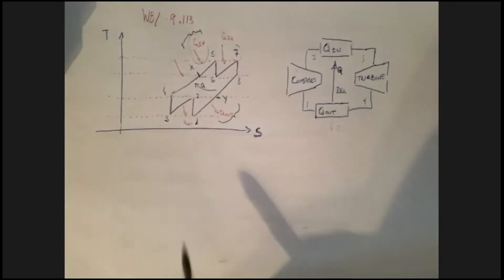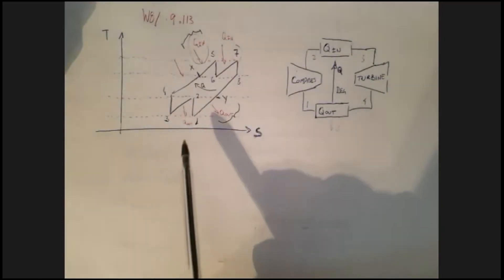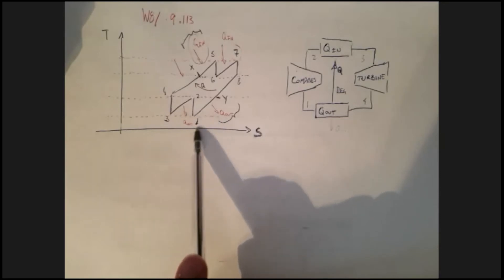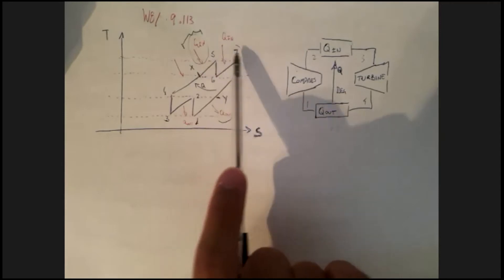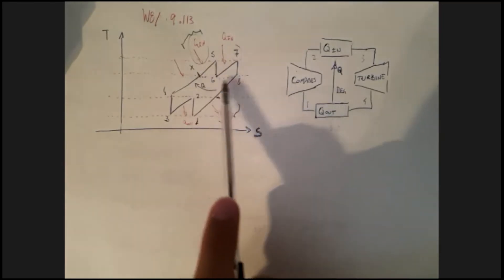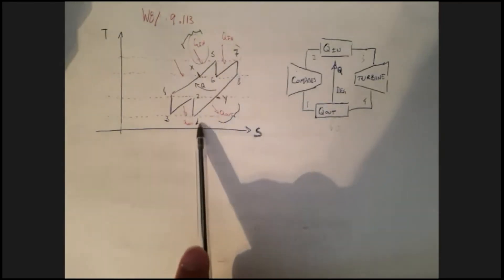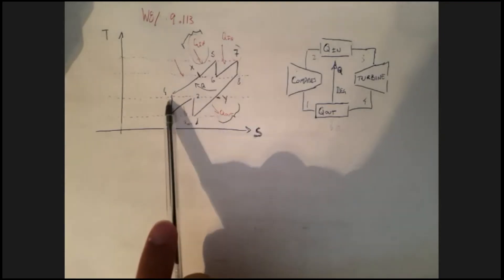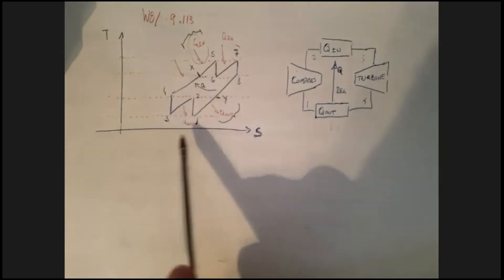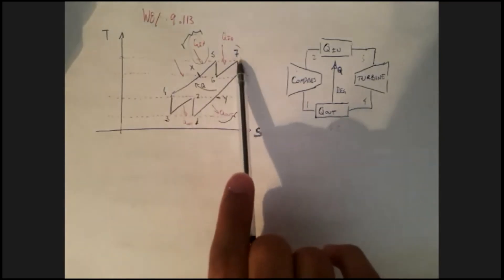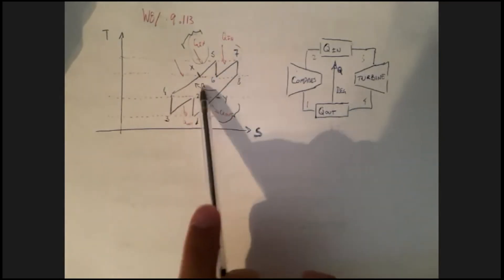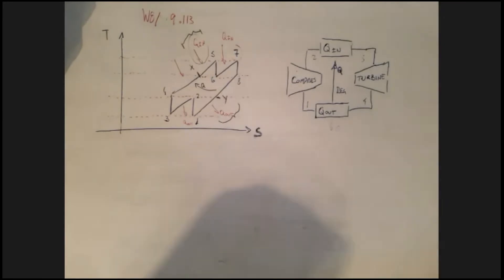Something particularly useful here is that the inlet temperatures and pressures are the same across equivalent stages. State one equals state three, state two equals state four, state five equals state seven, and state six equals state eight. They share the same temperature, and therefore the same thermodynamic properties.